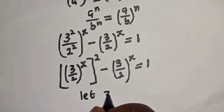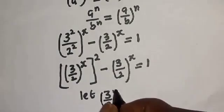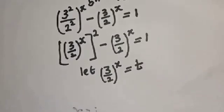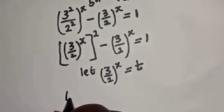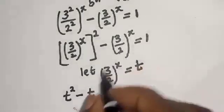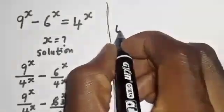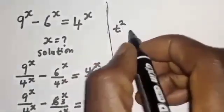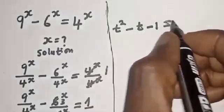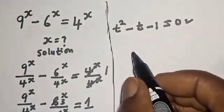Now let's set t equal to (3 over 2) raised to the power s. Then we have t squared minus t equals 1, which gives t squared minus t minus 1 equals 0. This is a quadratic equation which can be solved using the quadratic formula.